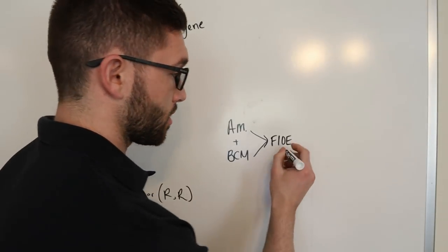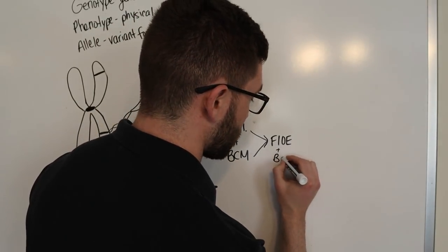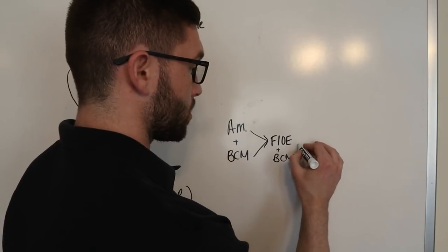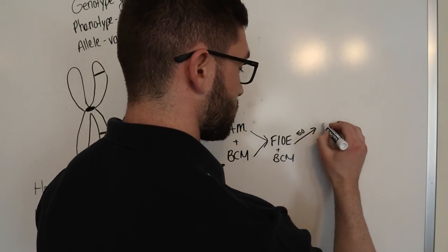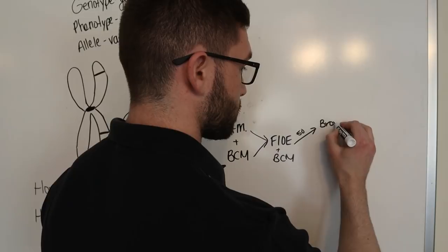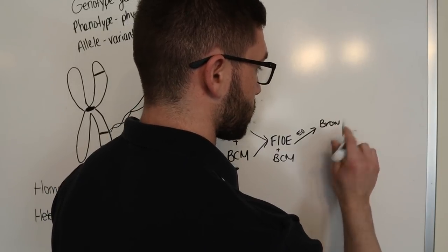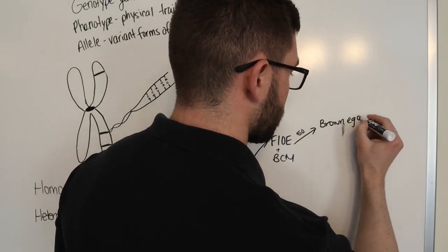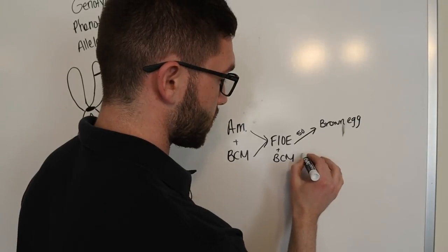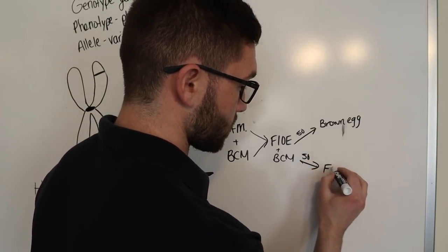If you mix the F1 OE with a Black Copper Maran again, you can either get 50% brown egg layers or 50% second generation olive eggers.